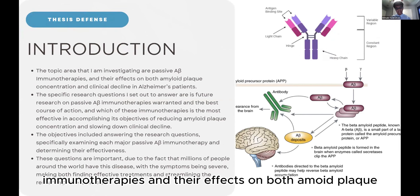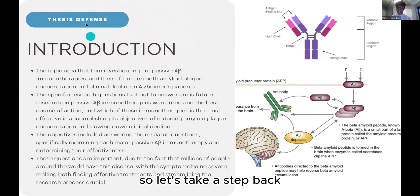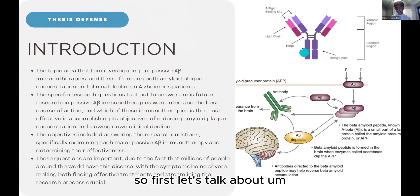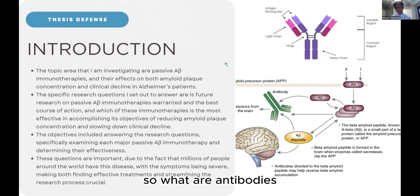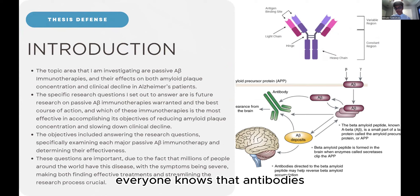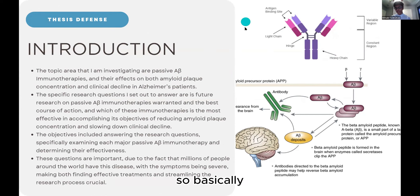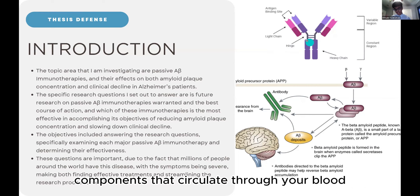My topic is about amyloid beta immunotherapies and their effects on both amyloid plaque concentration and clinical decline. Let's take a step back — what is this topic about? First, let's talk about antibodies. Everyone knows antibodies are part of the immune system, but what are they specifically?